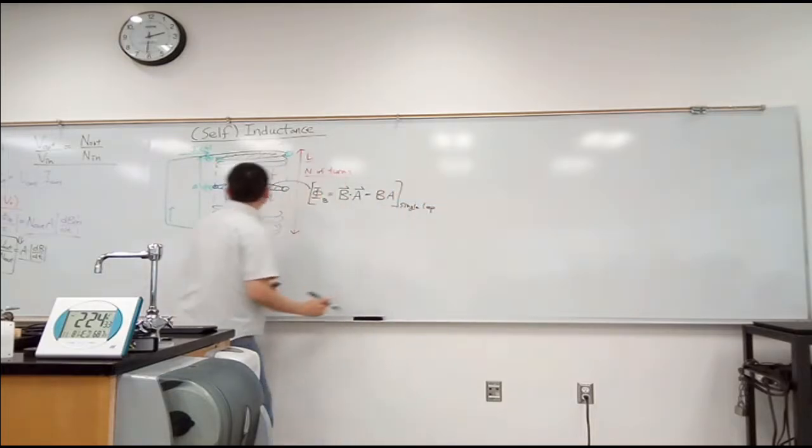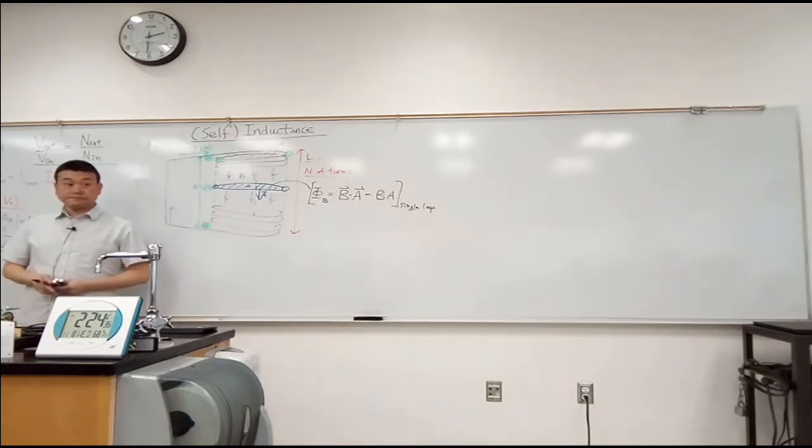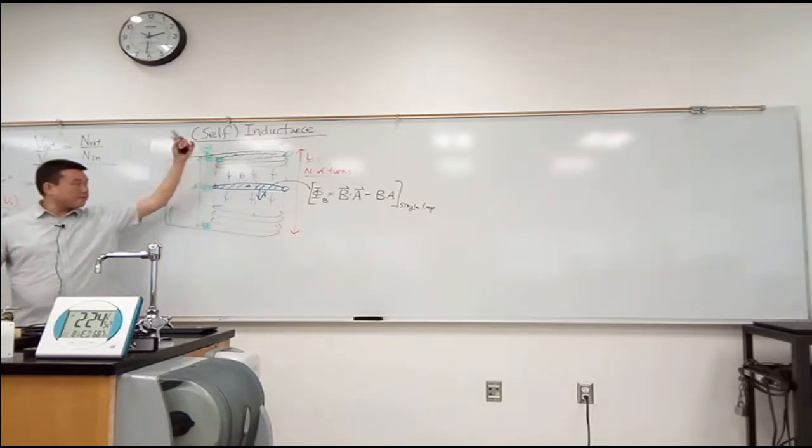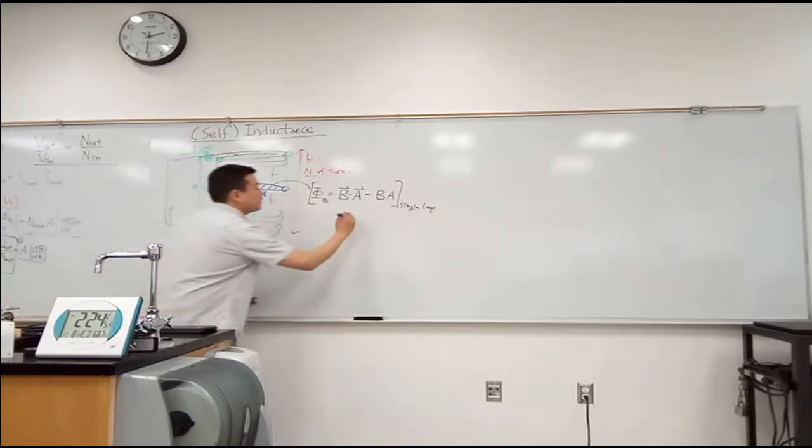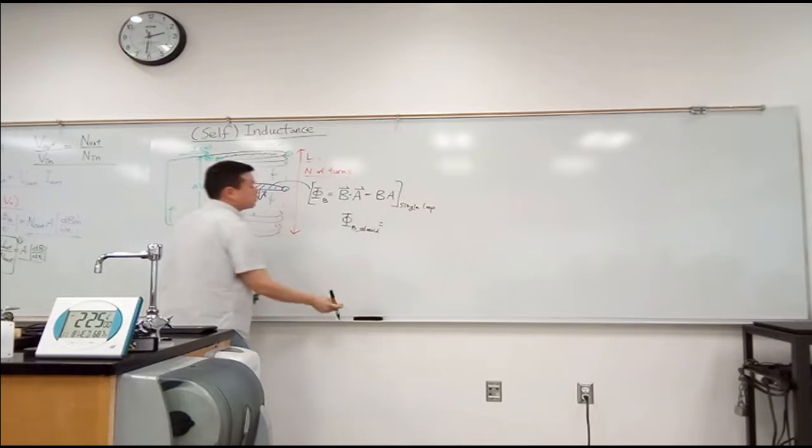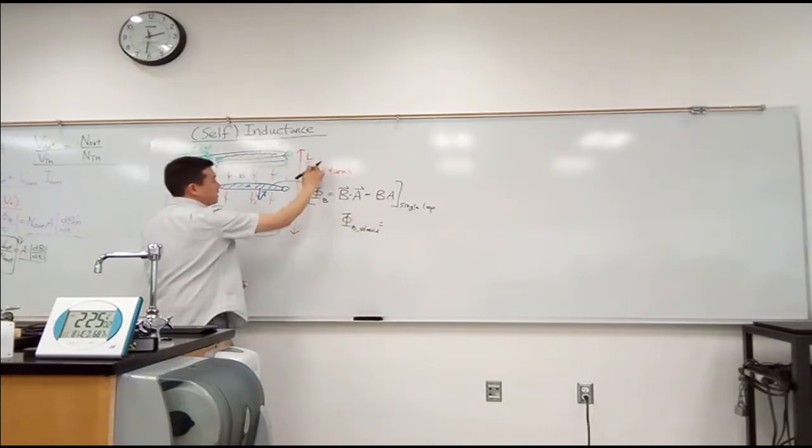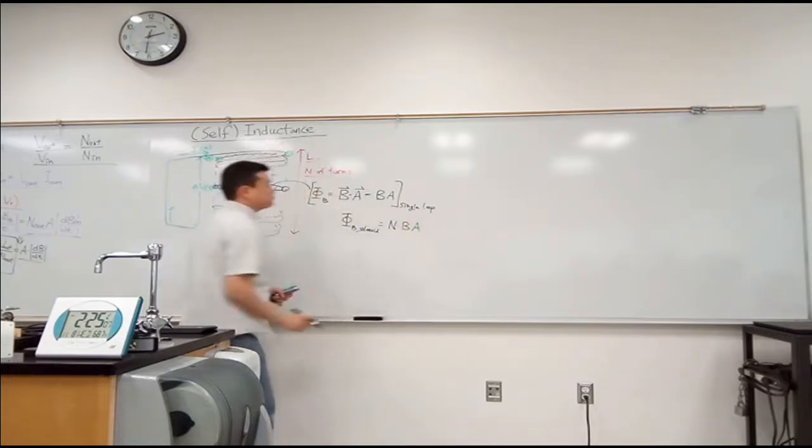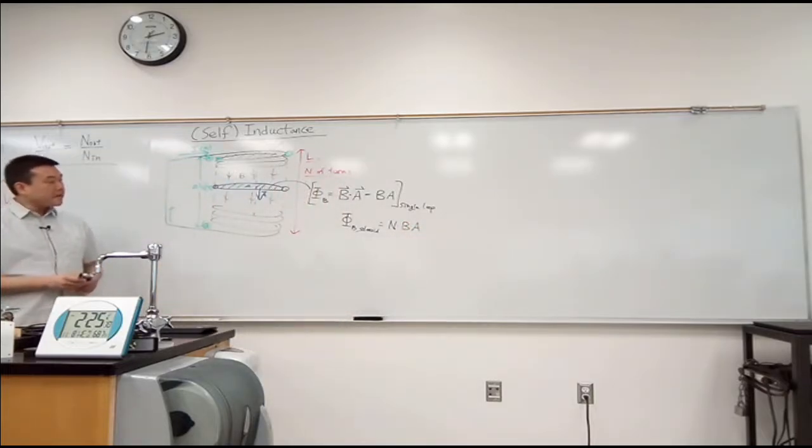That's a flux through a single loop. So what do you think flux is through the entire solenoid? The magnetic flux of the entire solenoid is going to be equal to this times N. So N times BA.